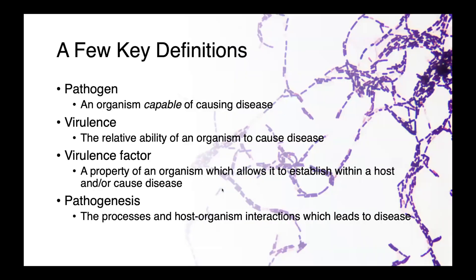There are a few key definitions we need to discuss. A pathogen is an organism capable of causing disease — it doesn't necessarily mean it does cause disease in all circumstances, but it is one capable of producing a deleterious outcome on a host. Virulence is the relative ability of an organism to cause disease. A virulence factor is some property of an organism which allows it to both establish within a host and/or cause disease — some physiological property that allows it to be a pathogen. Pathogenesis refers to the processes and host-microbe interactions that actually lead to disease.